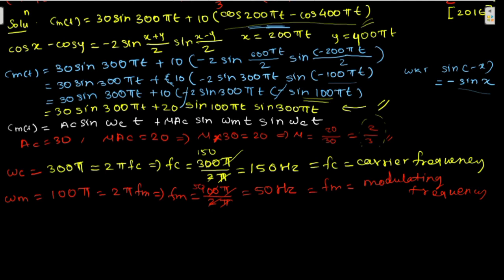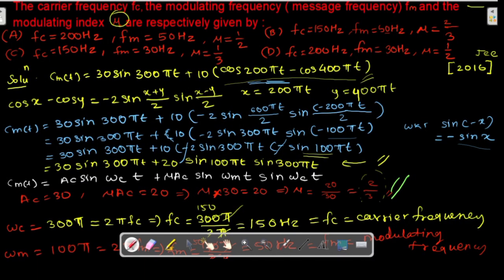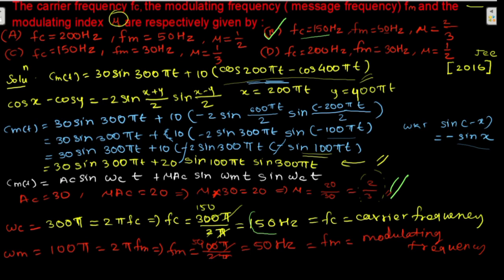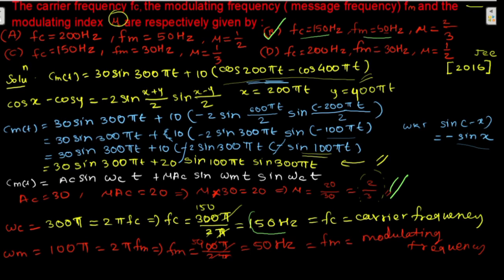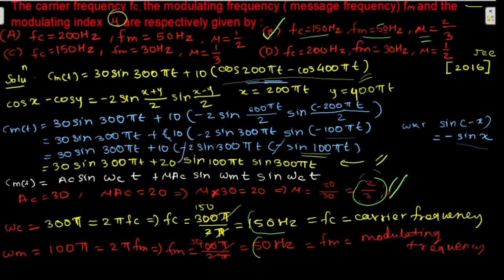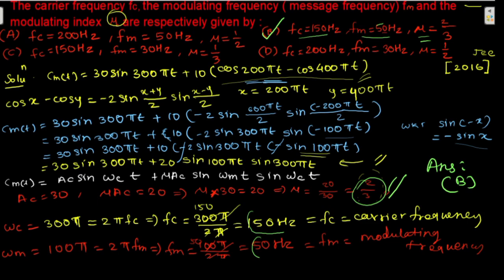So we got three answers: carrier frequency fc = 150 Hz, frequency of the message signal fm = 50 Hz, and modulation index μ = 2/3. Checking the options, option B is correct as it matches all three calculated values. Thank you.